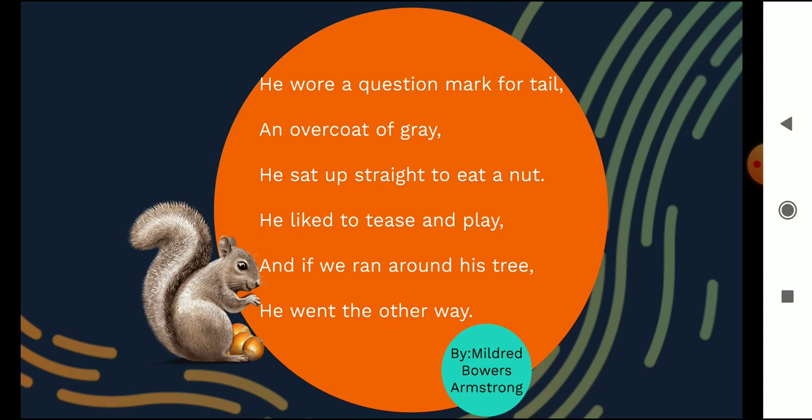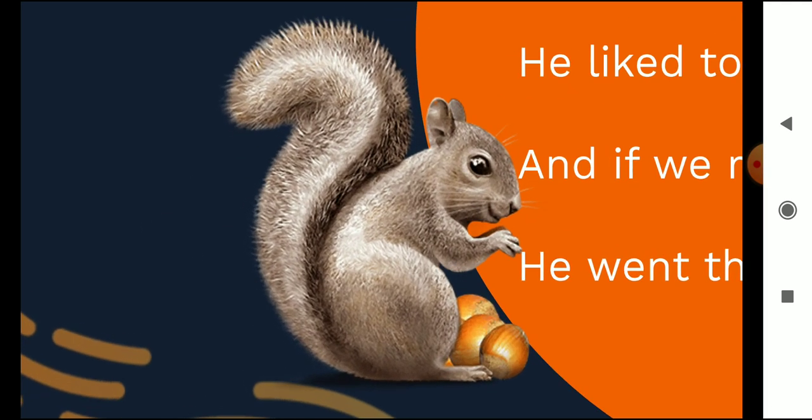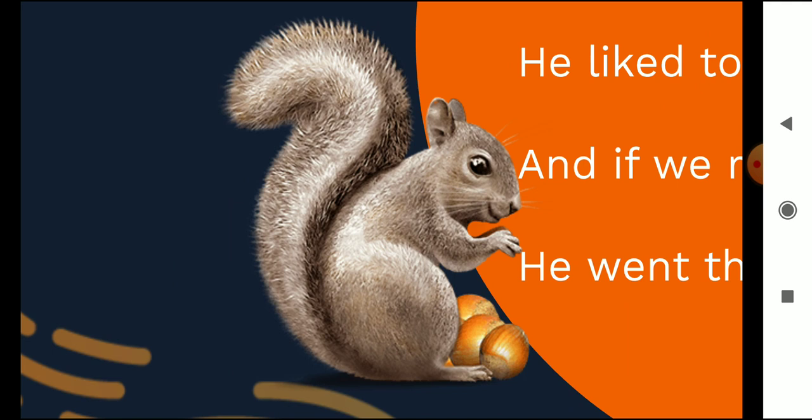This poem is written by Mildred Bowers Armstrong like I told you. You can see the picture of this squirrel. Now pay close attention to its tail. Can you see that it is shaped like a question mark? Can you see that it is bent in a certain way? That is what the poet is saying, that the squirrel's tail is bent like a question mark.